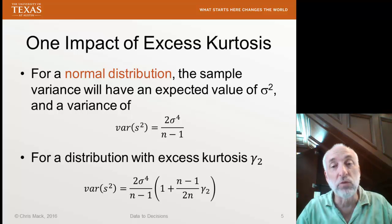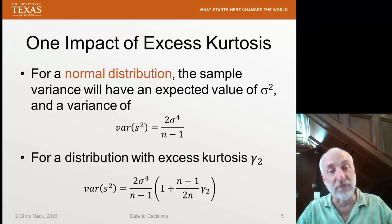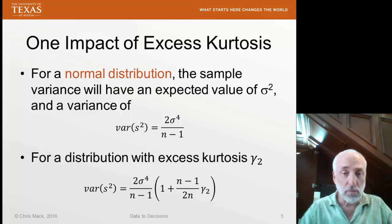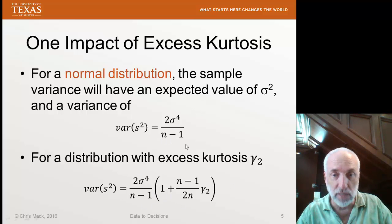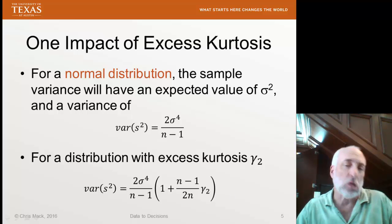But that assumes that we had a normal distribution. If we have a distribution with an excess kurtosis gamma 2, that changes our estimate of the variance of the variance. You can see it has the same multiplier out front. We have gamma 2 in the equation now.